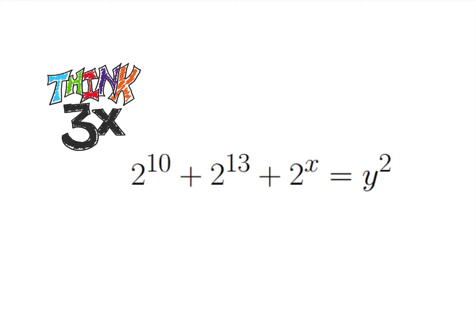So the first thing I'm going to do in number theory is try to simplify this and put it into a different format. I notice I have 2 to the 10th and 2 to the 13th, so let's join those together and factor out a 2 to the 10th. That gives me 2 to the 10th times (1 plus 2 cubed) plus 2 to the x, equal to y squared. And 1 plus 2 cubed is 1 plus 8, which is just 9.